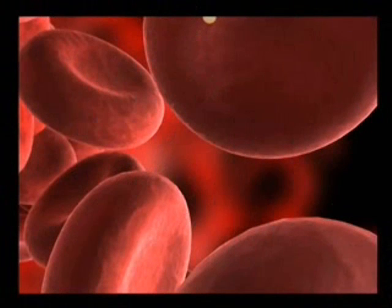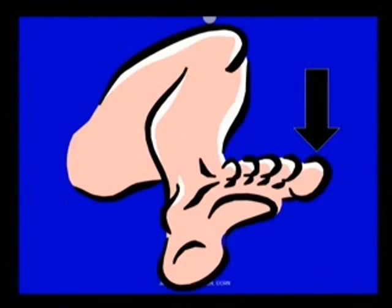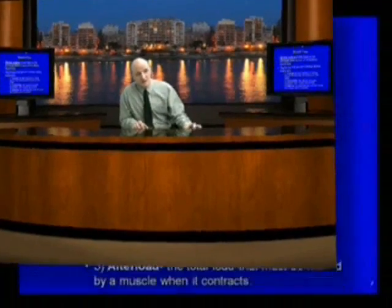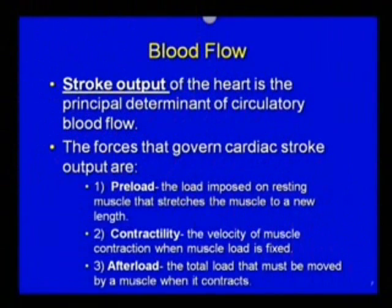Our red blood cells carry the oxygen throughout the body. We're interested in getting oxygen to every cell in the body, including the cells clear down in your big toe. Now, the stroke output of your heart is the principal determinant of circulatory blood flow. The forces that govern cardiac stroke output are preload, contractility, and afterload.